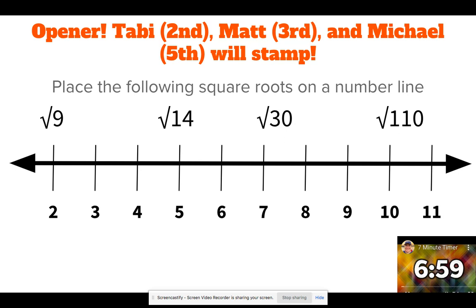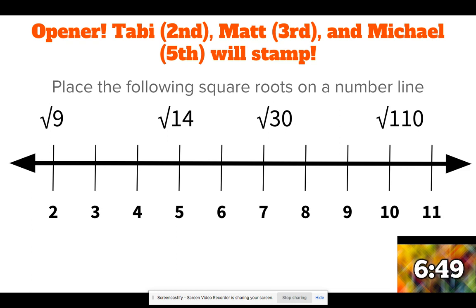So you should have started this opener. Thank you Tabby, Matt, and Mikey for stamping everyone. As a reminder, when you're placing square roots on a number line, you're just asking yourself what's the perfect square closest to 9. Well, it just so happens to be 3, so you should have put a point right at 3.